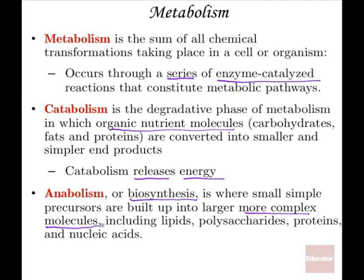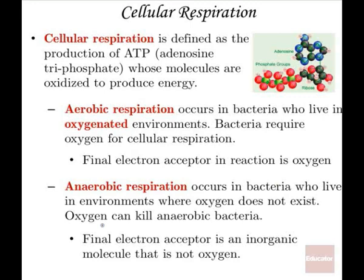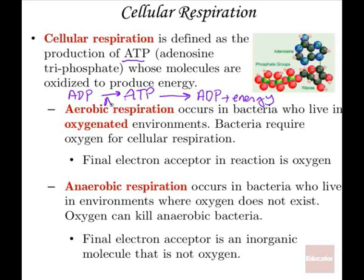Cellular respiration is defined as the production of ATP, and ATP is utilized in terms of producing energy. When ATP is broken down into ADP, we get energy. In order to produce ATP from ADP, it requires energy. So we're constantly cycling back and forth between these two forms of energy molecules — when they're broken down, energy is released, and when that extra phosphate is added to ADP, that requires energy.